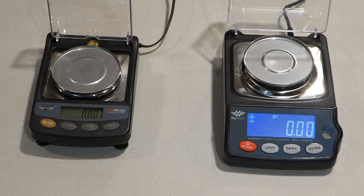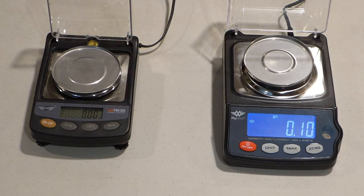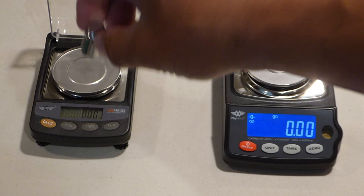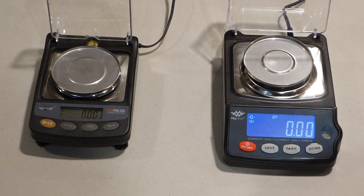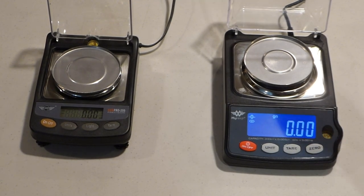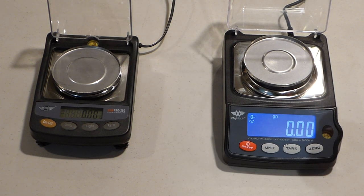Both of them come with hard cases, just your typical hard case, nothing too fancy. Holds the scale, keeps it safe during transport and for storage. And they come with calibration weights. The 250 comes with a 20 gram weight, and the 300 comes with a 50 gram weight. The main reason is the 50 gram weight corresponds with the larger weight capacity of the GEMPRO 2-300.